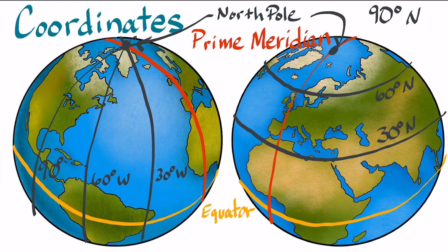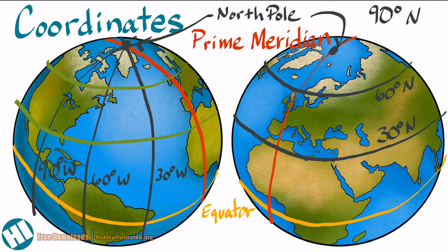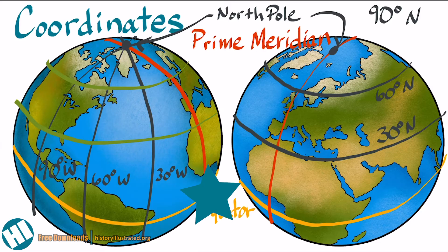So using this we can locate cities and other important things on the Earth. For example, New Orleans is roughly 30 degrees north and 90 degrees west. Let's find that real quick. First we can start where the equator and the prime meridian meet — this would be 0 degrees latitude and 0 degrees longitude.